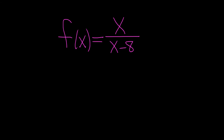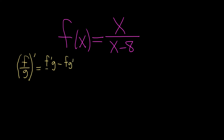Recall the quotient rule says: if you have a function f divided by g and you take the derivative, it's the derivative of the top, times the bottom, minus the top, times the derivative of the bottom, all over the bottom squared.